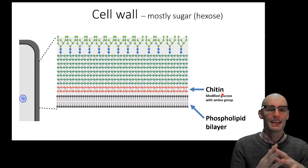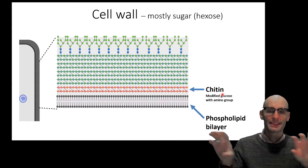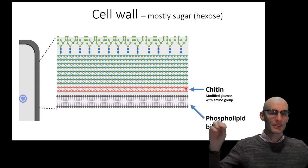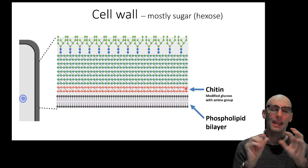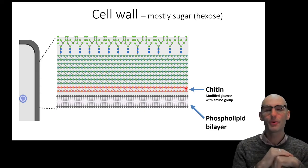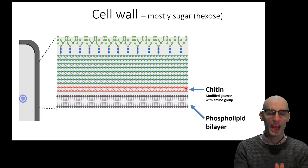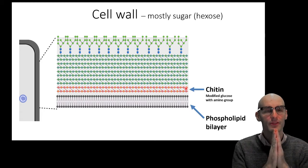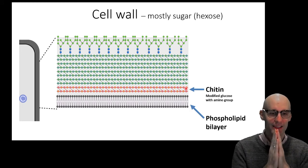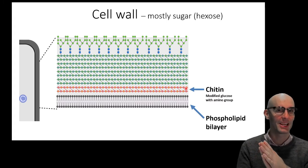Then we have chitin. Now, chitin is a modified glucose that has an amino group, and it's those chains of those hexagonal molecules. You can see I've drawn them here with little hexagons, those chains of little hexagonal molecules, and it's modified ever so slightly to have a nitrogen group, an amino group there. Now, the key thing about chitin is that if you are a fungus, you have chitin. It's one of the defining features of fungus. So if you are a fungus, you have chitin. But not all things that have chitin are fungus, just to make it a bit more confusing.